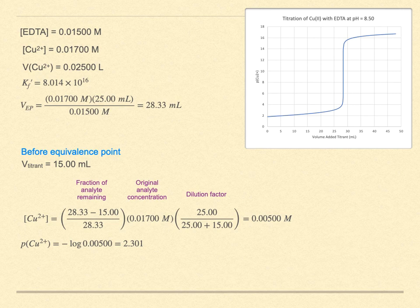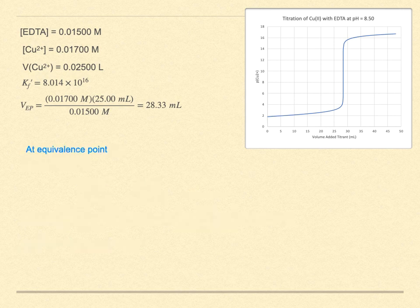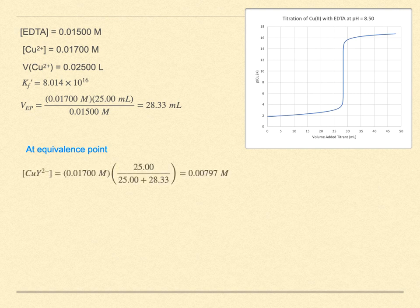So, what do we do at the equivalence point? Similar to other situations, we consider it like just a solution of the complex ion, but do not neglect dilution. The diluted concentration of the complex is just the original amount of copper times the dilution factor. The original volume of the aliquot was 25 milliliters. Now, at the equivalence point, it is 25 plus 28.33 or 53.33 milliliters. And the formal concentration, then, of the complex is 0.00797 molar.